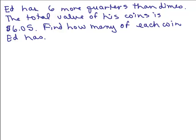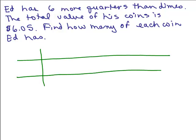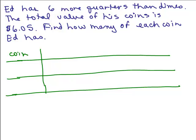So let's start again. Ed has 6 more quarters than dimes. I'm going to make up a chart for us to keep track of some information here, and we're going to define our variables right in the chart. So we're talking about two kinds of coins, right? So the type of coin, type of coin, well, we've got dimes, and we've got quarters.